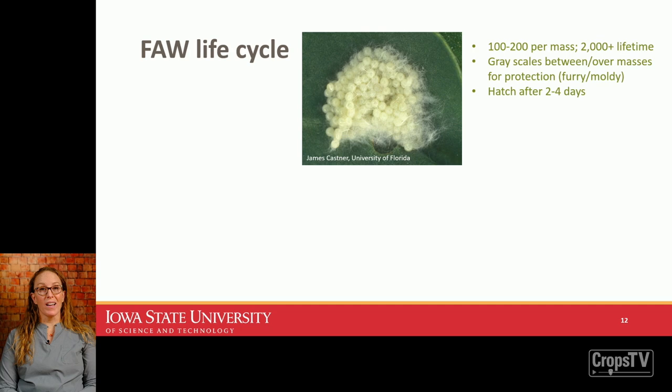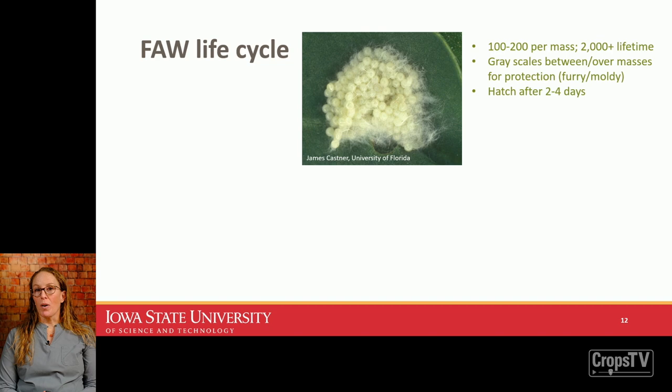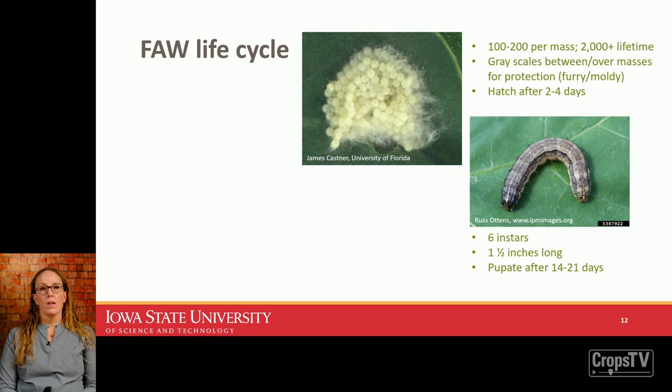Starting with the eggs: a female can lay 2,000 or more eggs in a lifetime. At any one time they'll lay 100 to 200 eggs per mass on vegetation and other structures. What's unusual is that females cover those egg masses in scales from their body, which I think provides protection from predators and desiccation. To me the eggs look furry or moldy, and they hatch after about two days.